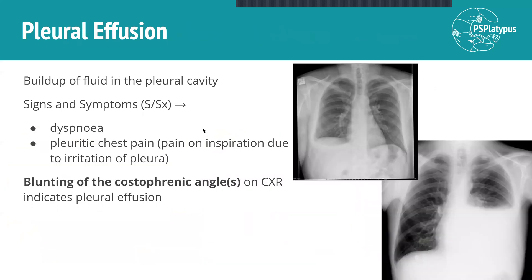If that happens, it's called a pleural effusion — a build-up of fluid in the pleural cavity. The main signs and symptoms are dyspnea, or shortness of breath, and pleuritic chest pain: that sharp pain on inspiration due to irritation and inflammation of the pleura. On chest X-ray, you'll see blunting of the costo-phrenic angle, which is usually nicely defined, because fluid builds up in the costo-diaphragmatic recess. Blunting of the costo-phrenic angles indicates pleural effusion — fluid in the pleural cavity.